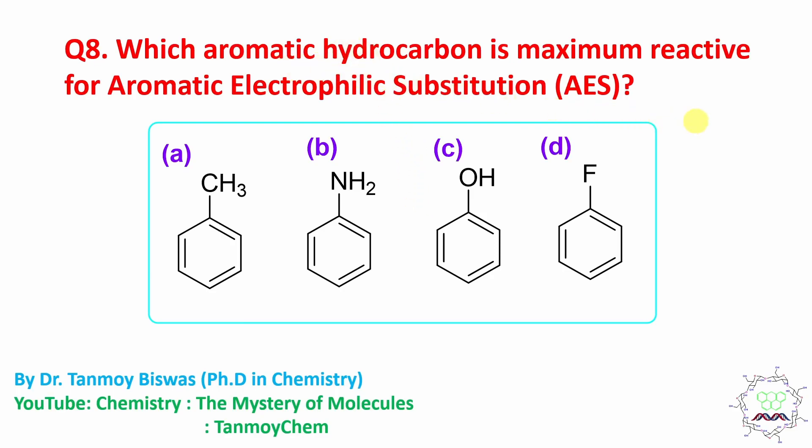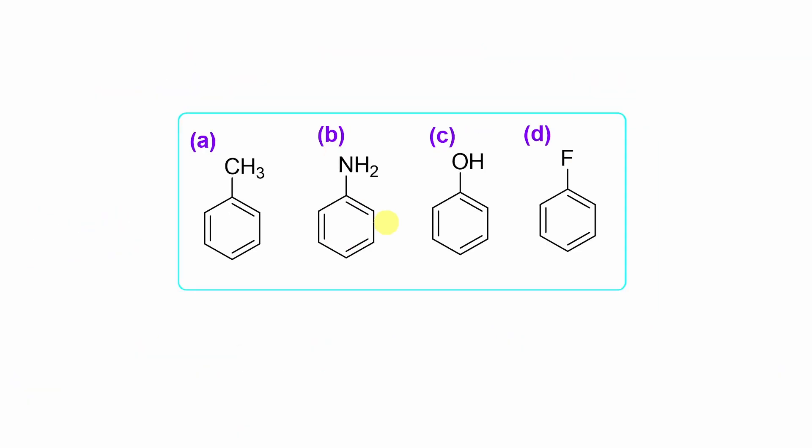Question is: which aromatic hydrocarbon is maximum reactive for aromatic electrophilic substitution? From there you can understand - electrophile. When we say the word electrophile, it means electron deficient molecule. So electrophile's reactivity with this molecule means with whom will the electrophile react more efficiently. Obviously, who is more electron rich? Now the actual question is: which of the aromatic hydrocarbons is more electron rich? So now I guess you got the nerve, let's start.